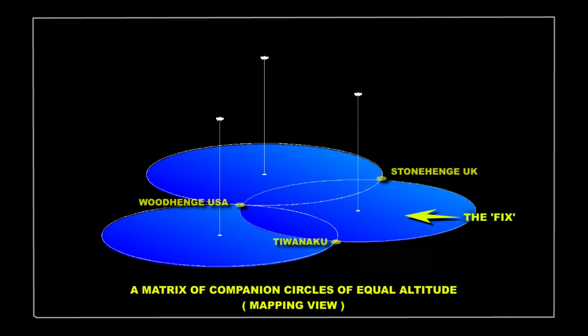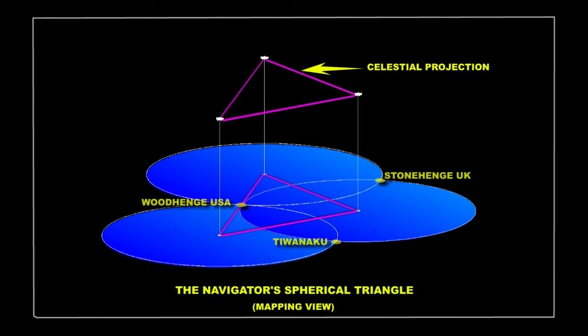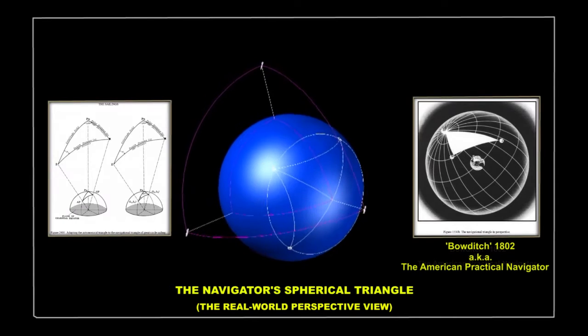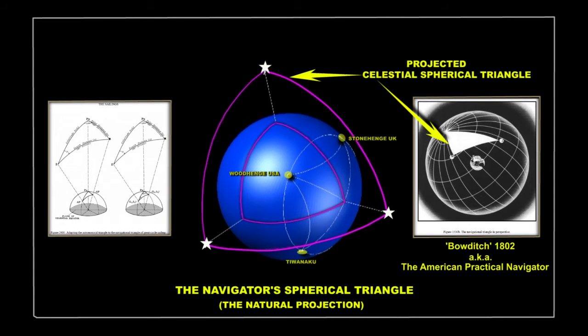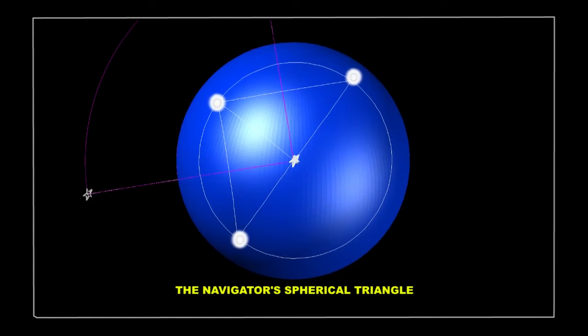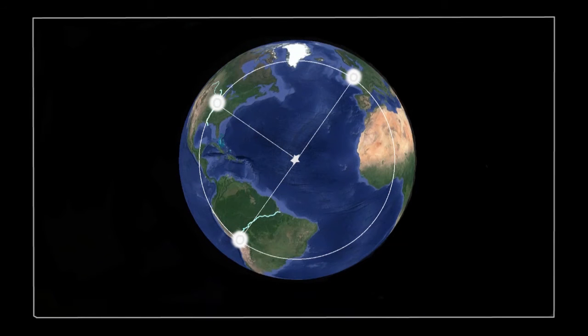In addition, this matrix of equal altitude circles also creates a navigator spherical triangle, which allows for a selected point on Earth to be matched with a corresponding star point on the celestial sphere, which allows for the collection of fixes to be plotted on either a sphere, or on a flat map by virtue of linear projections.